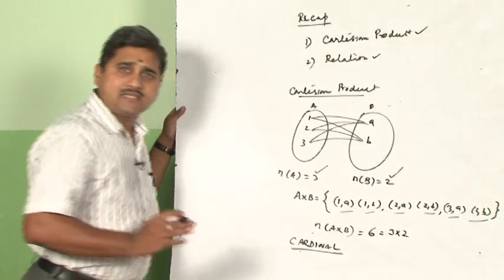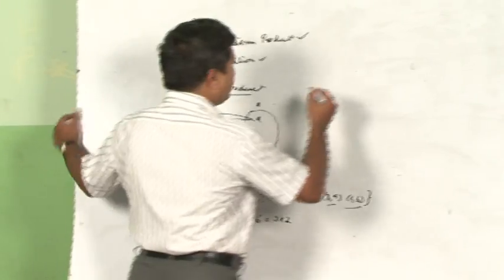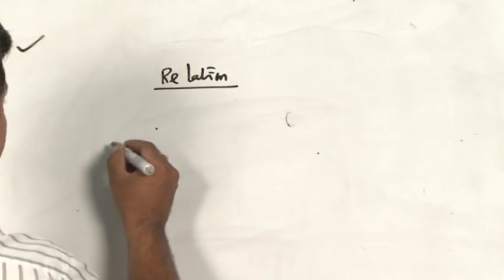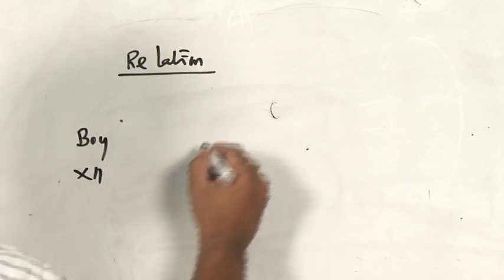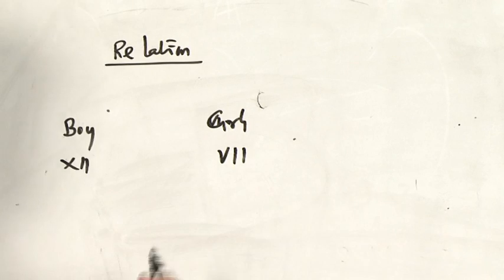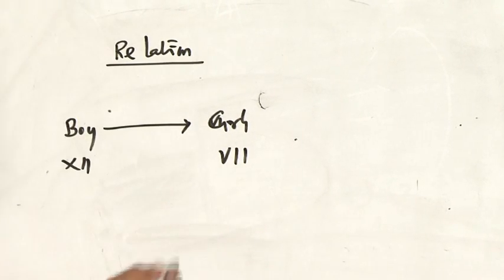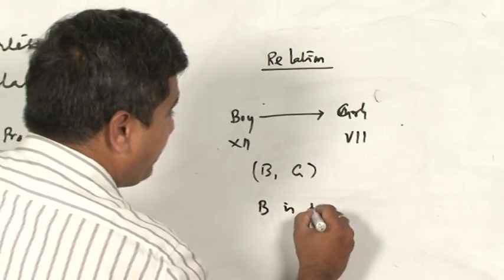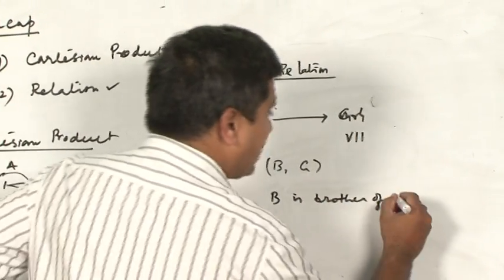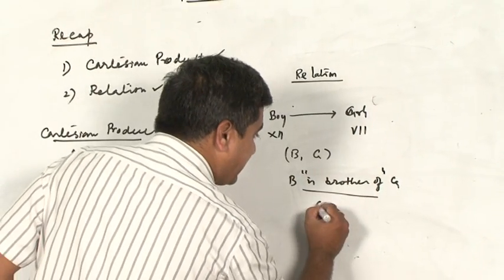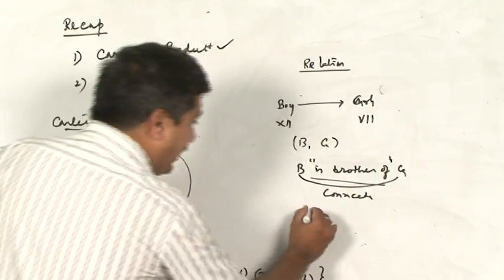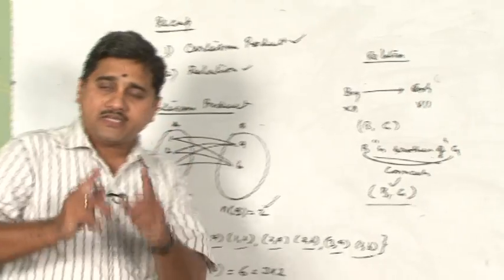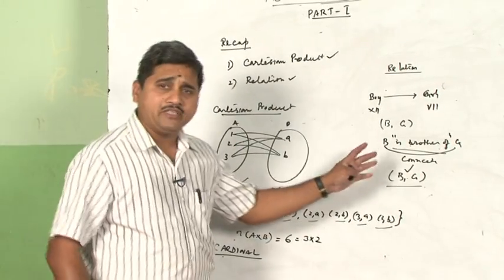Now let us recapitulate relation. Suppose there is a boy in your twelfth class and a girl in class sixth, seventh, or eighth. These two could be related — for example, 'B is brother of G.' The word 'brother of' is a connective that brings two different objects together and makes an ordered pair. To have this particular pair, you need a connection between them, and that connection is called a relation.